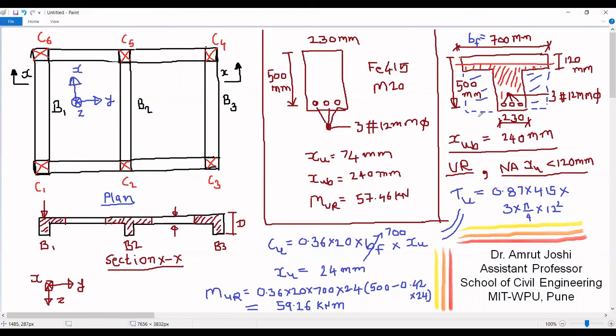So in nutshell, if the neutral axis lies in the flange and we are considering a singly reinforced section, then the flange section doesn't have much advantage over a rectangular section as far as moment of resistance is concerned. With this note, we conclude today's session. Thank you.